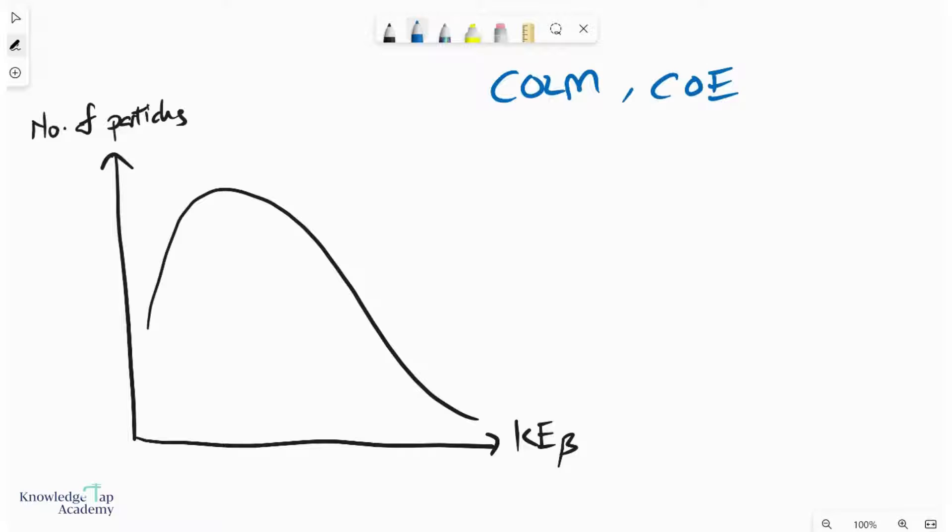And so it was then proposed that when the parent nucleus underwent beta decay, there was not only a daughter and a beta particle, but there could have been some other unknown particle over there that was accounting for this unbalance in energy and momentum.